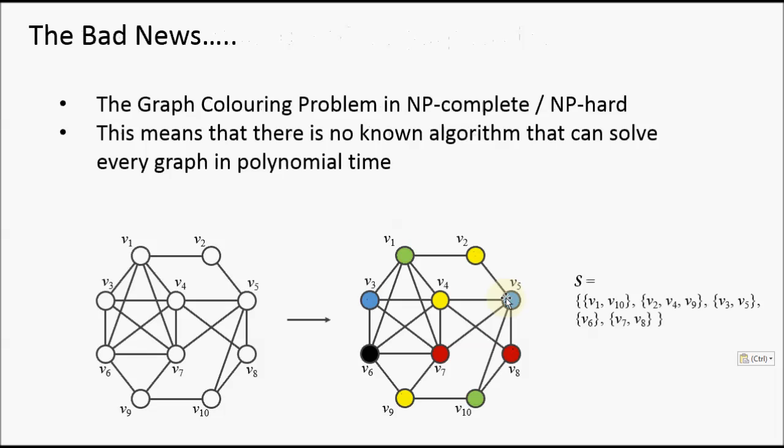Now the bad news is that graph coloring itself is a very difficult problem to solve. When I say the word solve, what I mean is I'm looking for an algorithm that can take any graph of any size and color it optimally. So color it using the minimum number of colors.